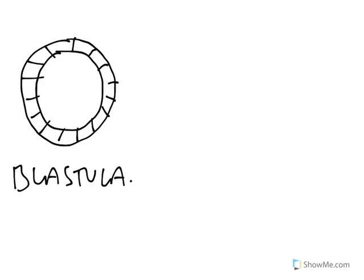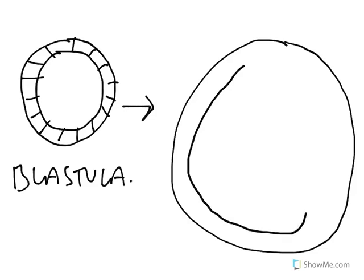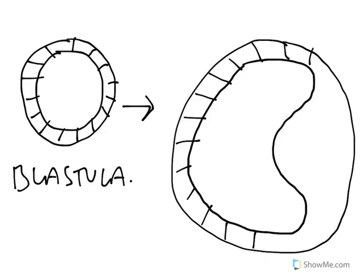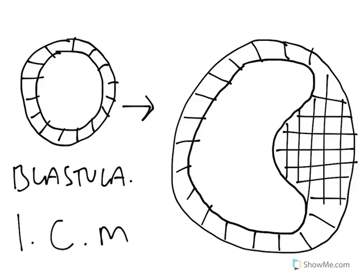As the blastula grows and develops, something very interesting happens. In this late blastula, one portion of the blastula thickens. What we now have is a cavity within a ball, but additionally there is this thickened area of cells — a mass of cells called the inner cell mass.